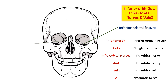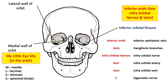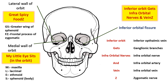A mnemonic to remember the bones forming the medial wall of the orbit is 'my little eye' — giving you maxilla, lacrimal, ethmoid, and sphenoid bones. A mnemonic for the lateral wall of the orbit is 'great spicy foods,' giving you the greater wing of sphenoid and the frontal process of the zygomatic bone.